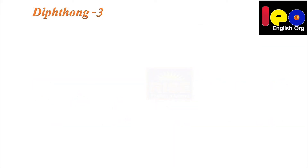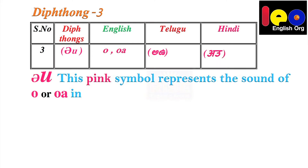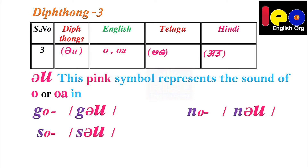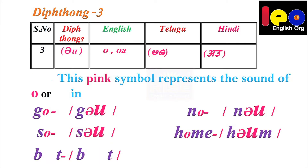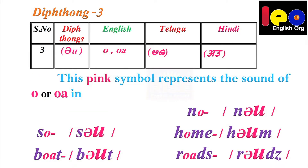Diphthong 3. Here below you can see two pink symbols — reverse E and U. Both together form a diphthong. Reverse E sounds like a light 'A' and U sounds like 'U'; the combination sounds like 'əʊ'. Don't say 'AU', say 'əʊ'. This pink symbol represents the sound of O in 'go', O in 'so', O in 'home', O-A in 'boat', O-A in 'road'. Don't say 'go', say 'gəʊ'.